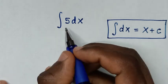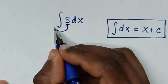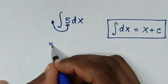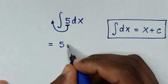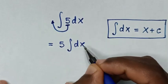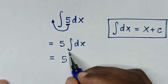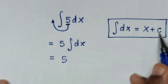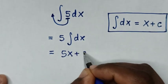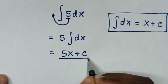From our problem, this 5 is a constant, so this 5 will move outside of the integral. It will be equal to 5 times the integral of dx. Then the integral of dx is x plus C, so it will be 5x plus C. Therefore, this is the final answer: 5x plus C.